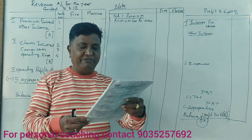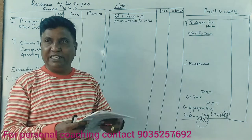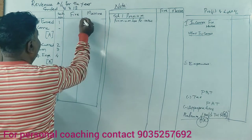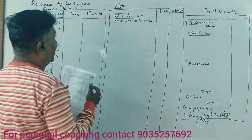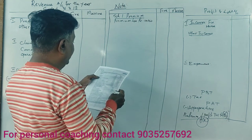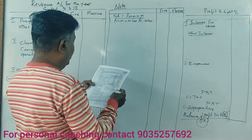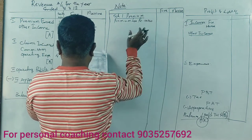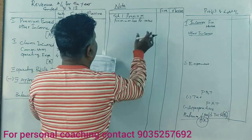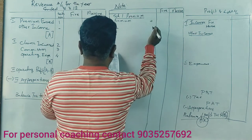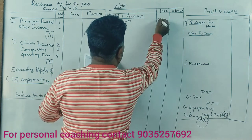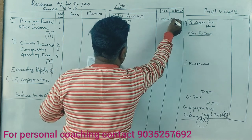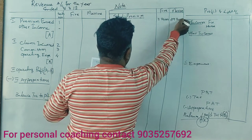We need to prepare the revenue account and profit and loss account. The revenue account is prepared as per the schedule. Premium less reinsurance: premium is ₹3,74,000 for fire and ₹2,97,000 for marine.